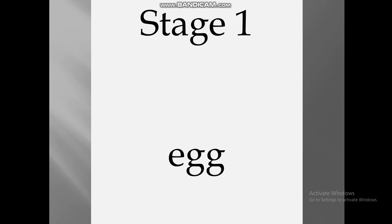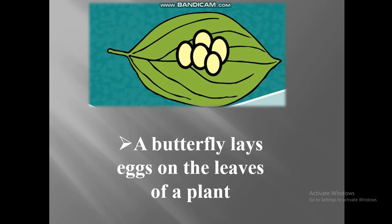Stage number 1: egg. A butterfly lays eggs on the leaves of a plant.